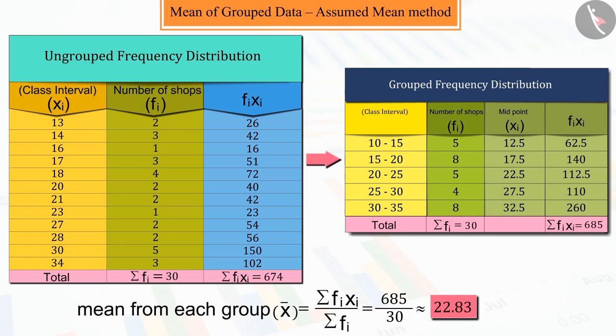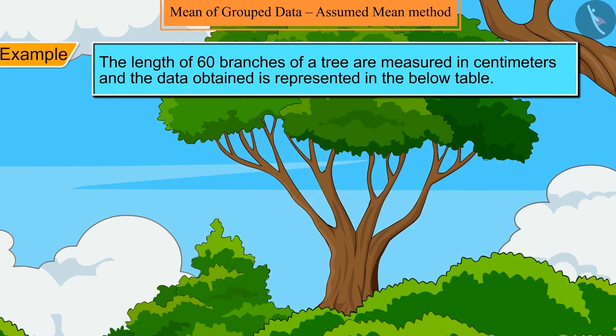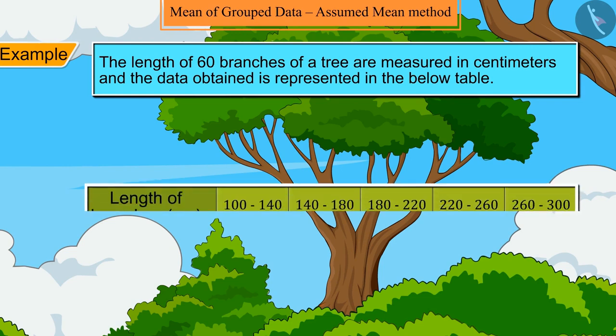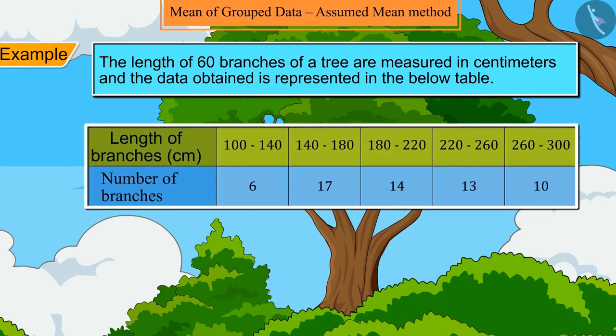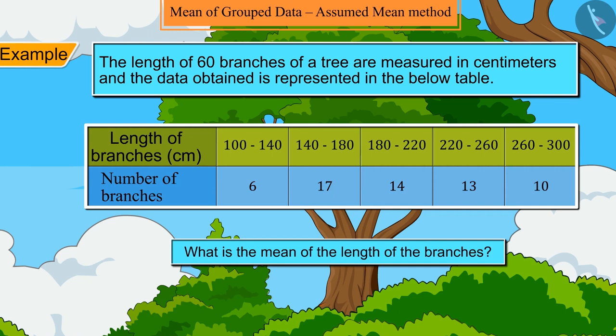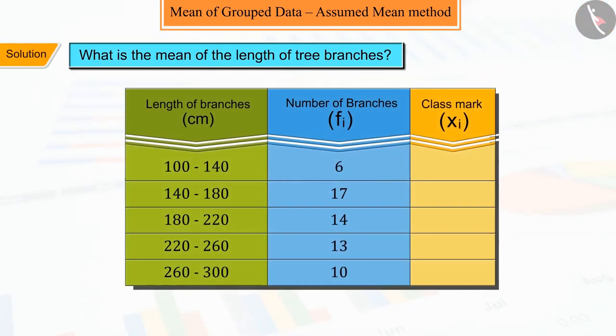Let's try to understand it with the help of an example. The length of 60 branches of a tree are measured in centimeters and the data obtained is represented in the below table. Then, what is the mean of the lengths of the branches? From the given table, we can say that for each class interval first,